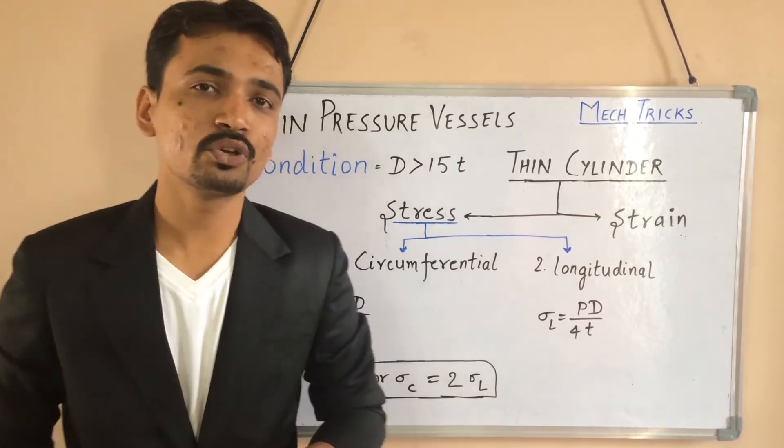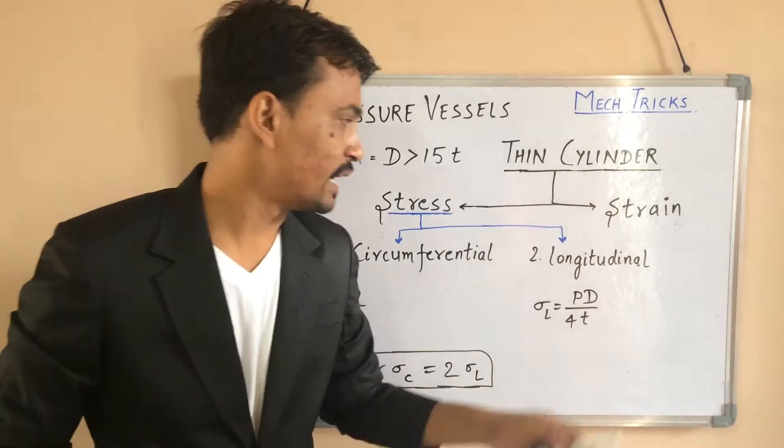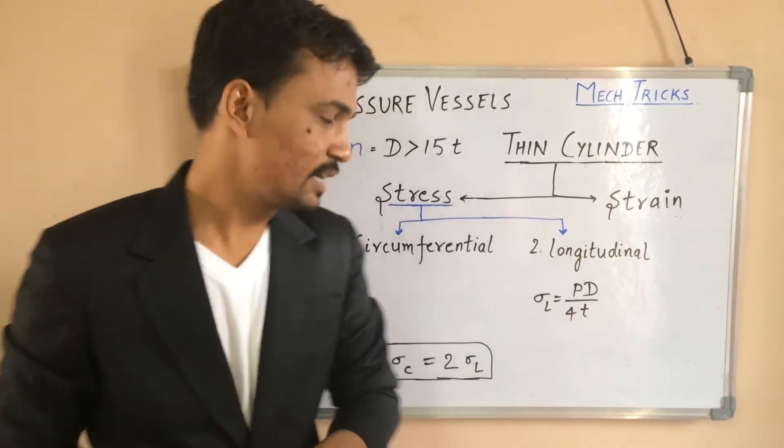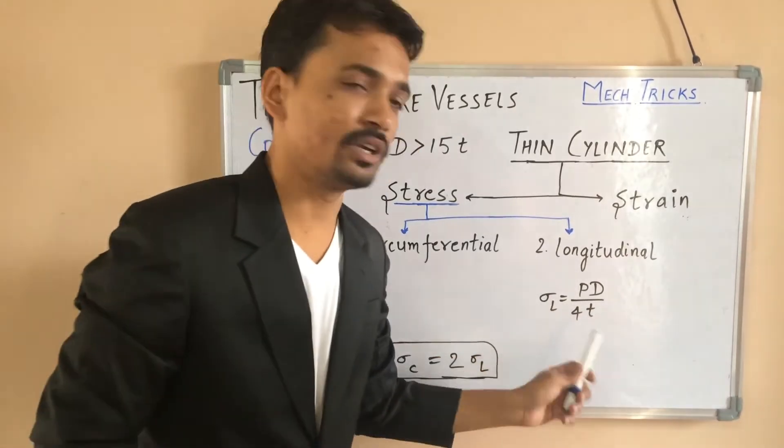There are two types of stresses produced in a thin cylinder. That are hoop or circumferential stress and the second one is longitudinal stress. And I have written the formulas below: PD by 2T and PD by 4T.